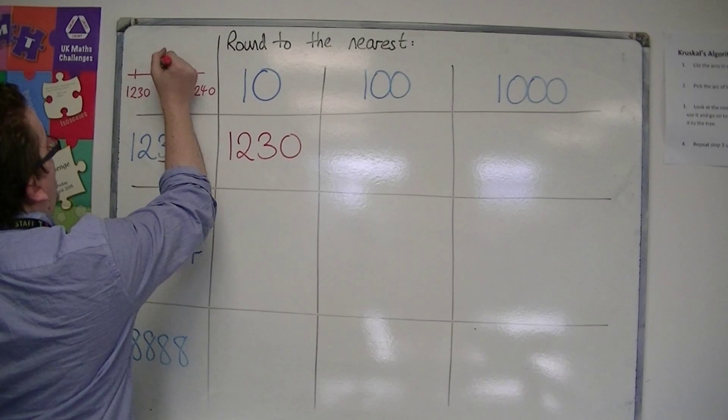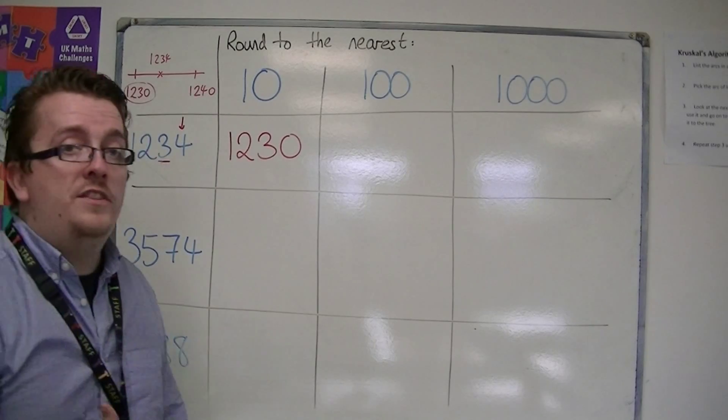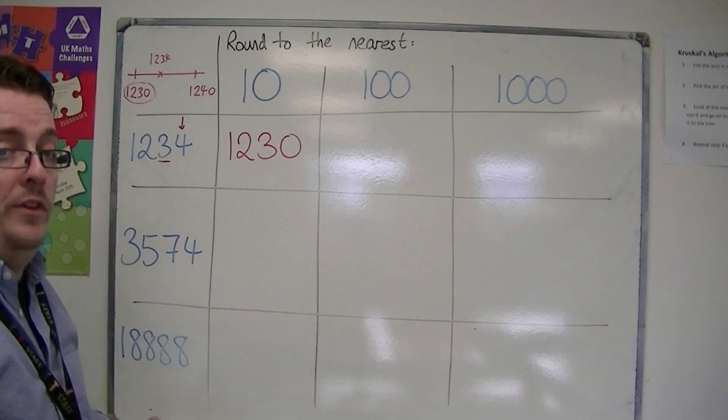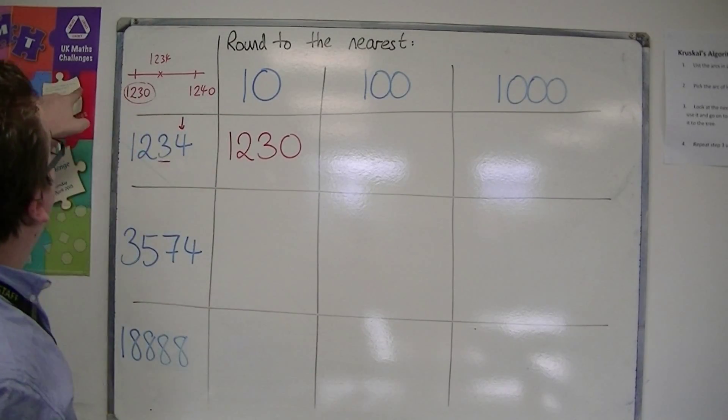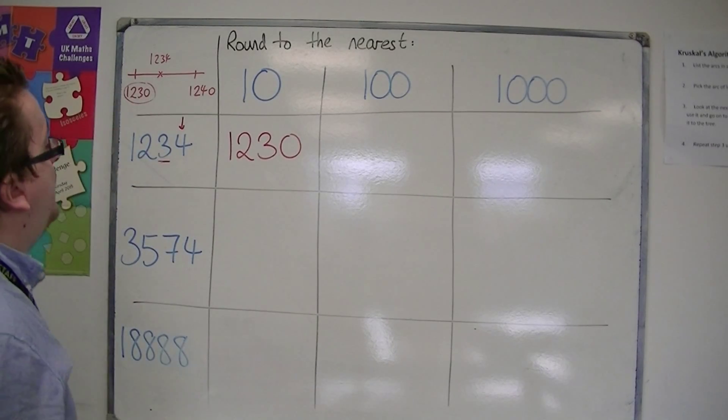1,234 is about there. So you can see it should be close to 1,230 rather than 1,240. Okay, 1,220 is over here. Okay, so we're looking for the nearest ten. So that's how it should work.